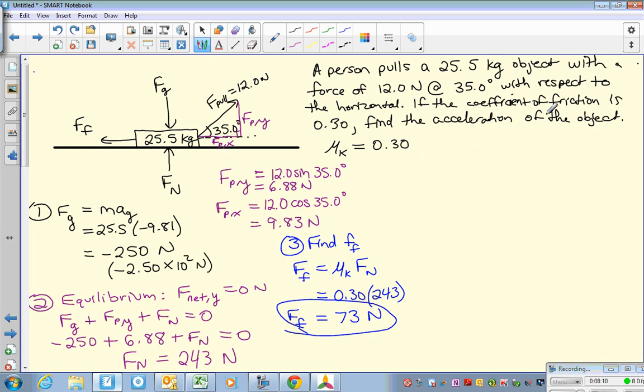And so for this, acceleration of the object, we have the object accelerating in the x direction. So in this, the way we would set that up is that we need to find our net force in the x direction. Our net force in the x direction, so pay attention to what's going on. And in that, we have friction force plus Fpx, so friction force and the force of the pull in the x direction are the only things going on.